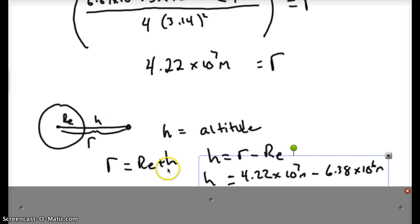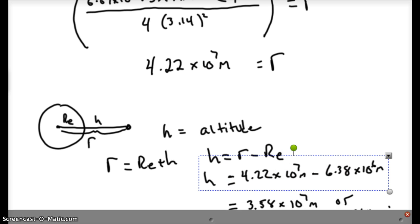So if we express things that way and rearrange for the altitude above the surface, you can take that number you just calculated, the distance between the center to the position of the satellite, subtract off the radius of the Earth, and that should give you a value for the height above the Earth.